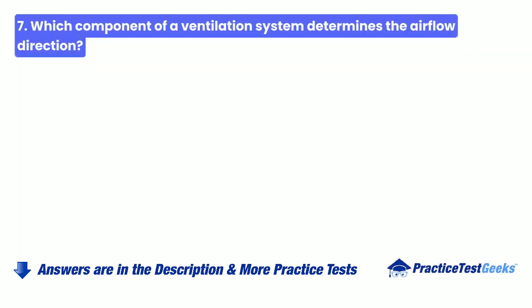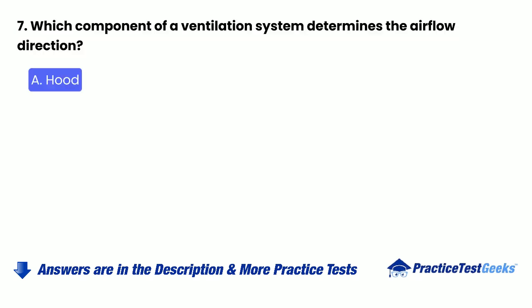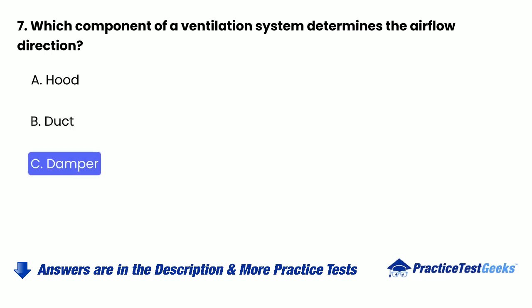Question 7: Which component of a ventilation system determines the airflow direction? A. Hood. B. Duct. C. Damper. D. Fan.